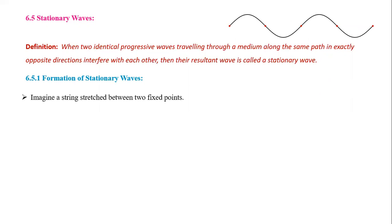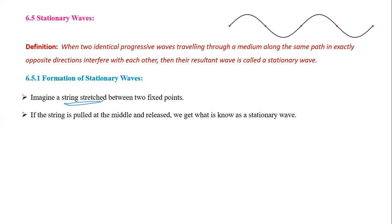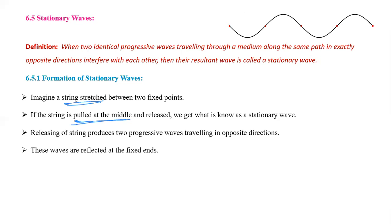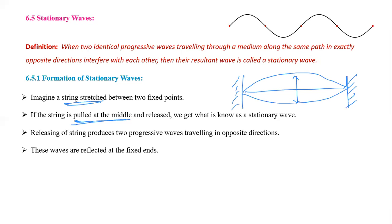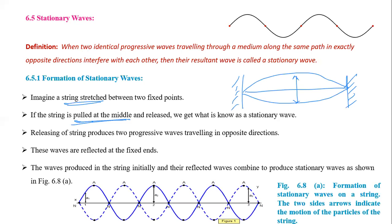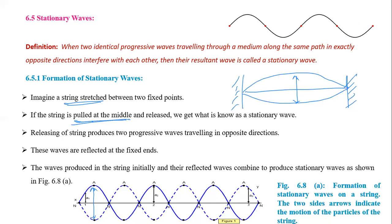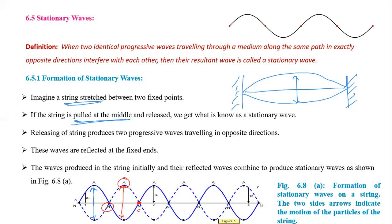To understand the formation of a stationary wave, imagine a string stretched between two supports. If we pull the string at the middle and release it, we get a stationary wave. You can see in the diagram that the part of the wave having maximum amplitude is called an antinode, and the point having minimum amplitude is called a node.